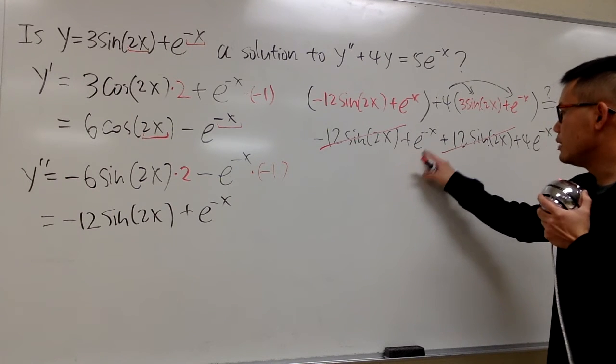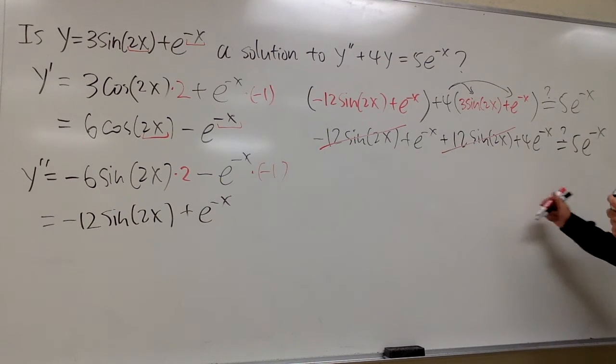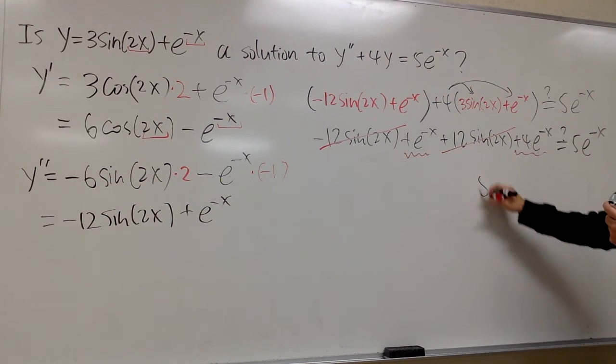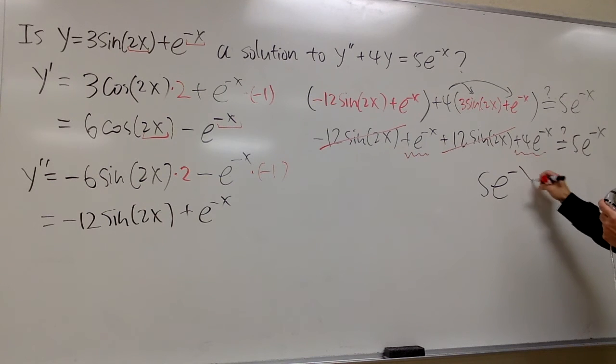This is plus 1 e to the negative x, this is plus 4. So altogether, we can combine like terms. Here and here is 5 e to the negative x, which is exactly the same as this.